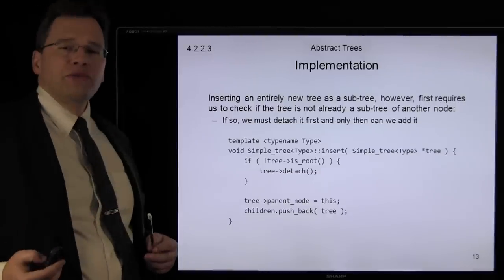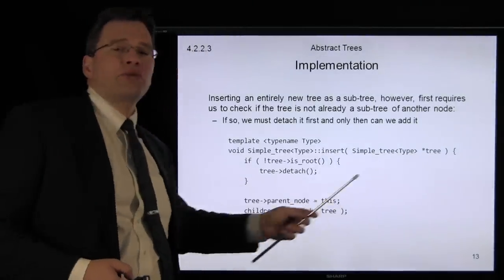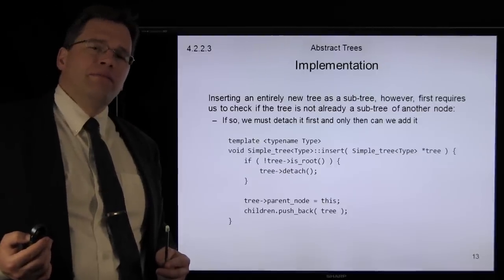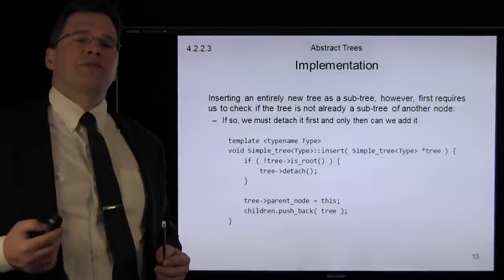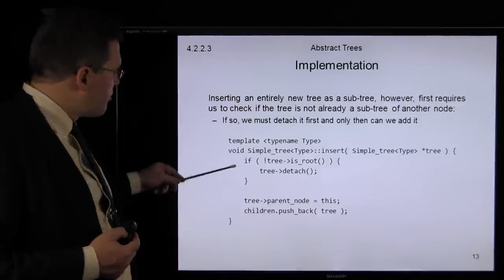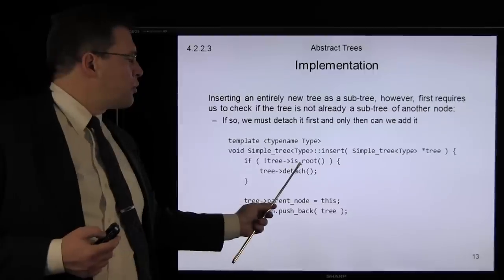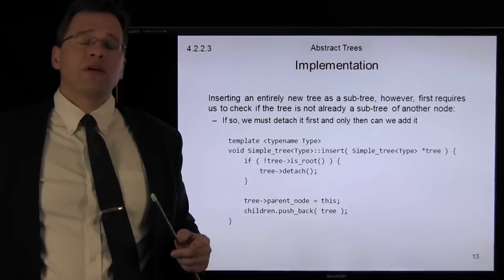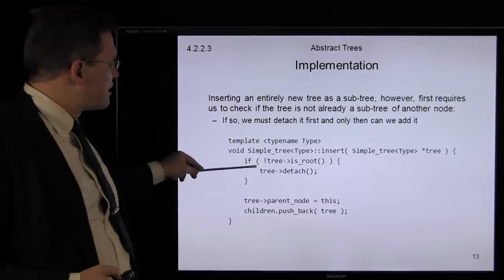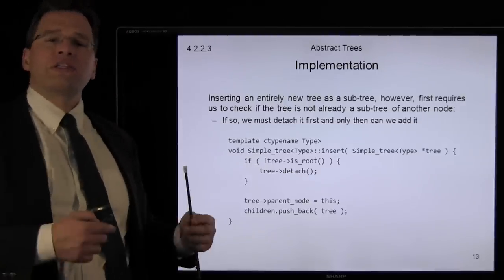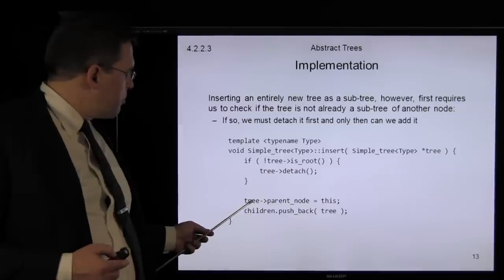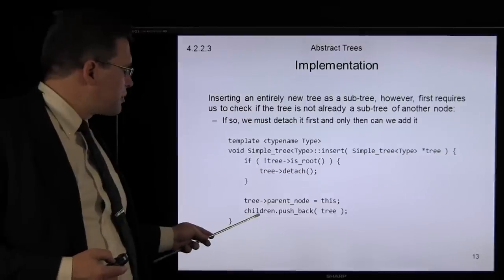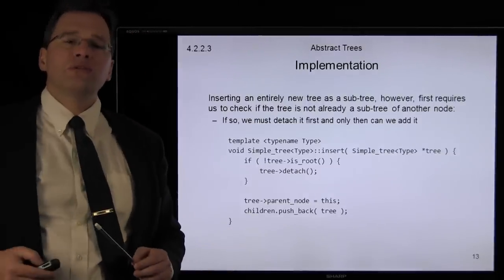If we want to insert an entirely new tree, we pass a reference to a tree. The tree we're adding might already be a subtree of some other tree, so we first check: is it a root node? If it is not a root node, it's already a child somewhere else — you can't have two parents. So first we detach the tree from its parent. Once done, we set this node as the parent of the tree being added, and simply push it onto the singly linked list.